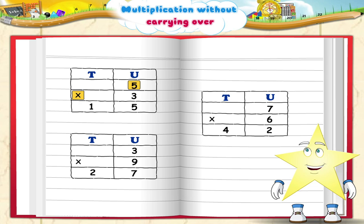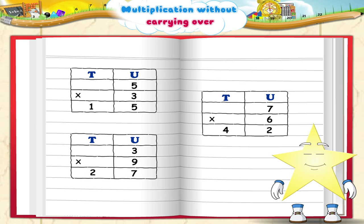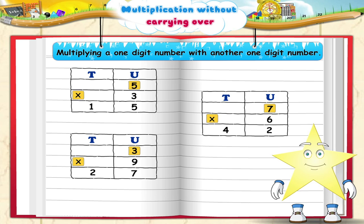5 multiplied by 3 — the product is 15. 7 multiplied by 6 — the product is 42. 3 multiplied by 9 — the product is 27. All correct! What you have just finished is multiplying a one-digit number with another one-digit number.